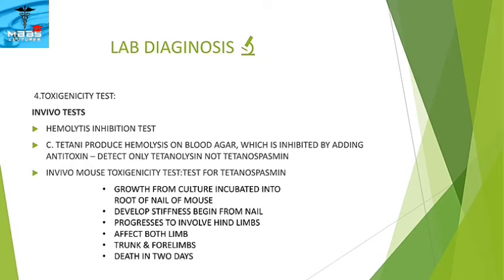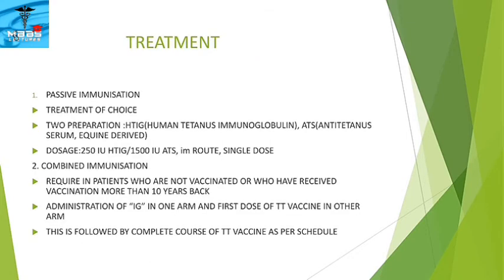In the mouse toxigenicity test, stiff nails develop beginning from the tail, then progressing to involve the hind limbs, then both limbs, then the trunk and forelimbs are affected, resulting in death within two days.